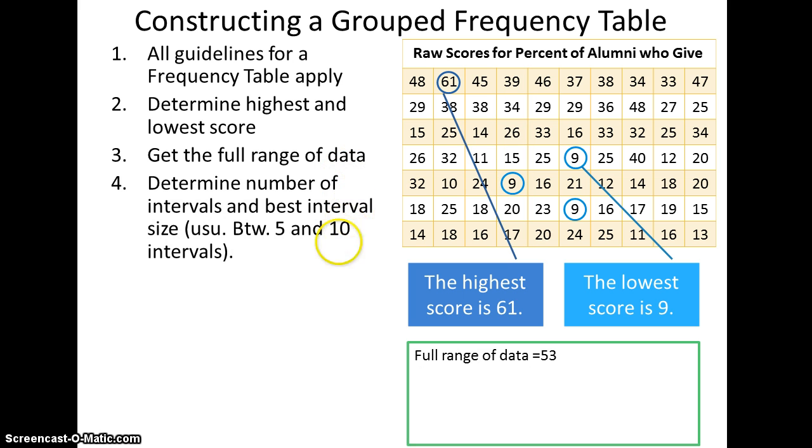Next we want to determine the number of intervals and the best interval size. Usually, we want somewhere between 5 and 10 intervals, but if we have an extremely large data set, we may have more than that. In this case, between 5 and 10 intervals ought to work for us. So our full range of data is 53.